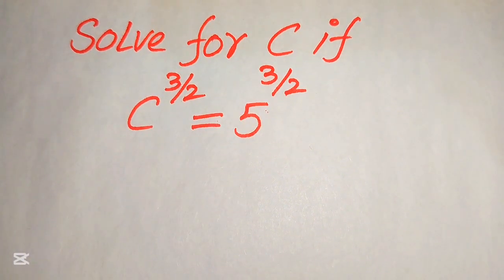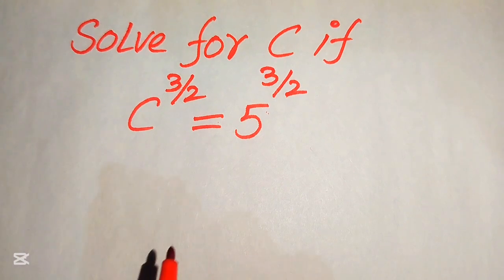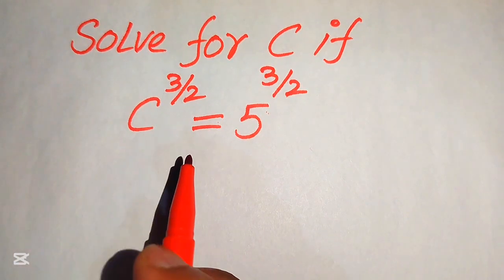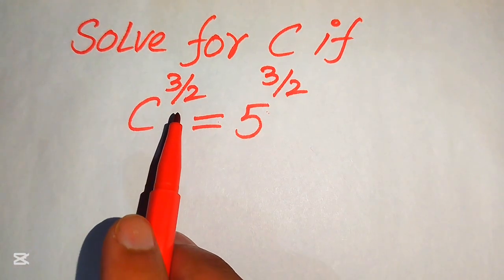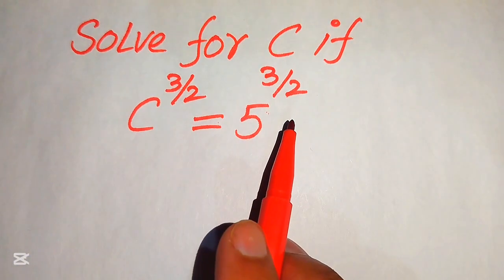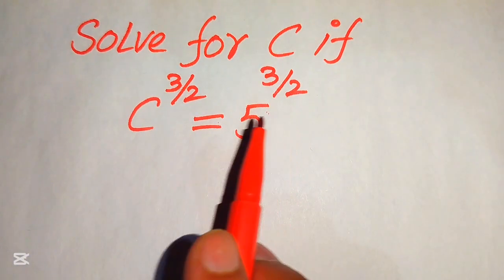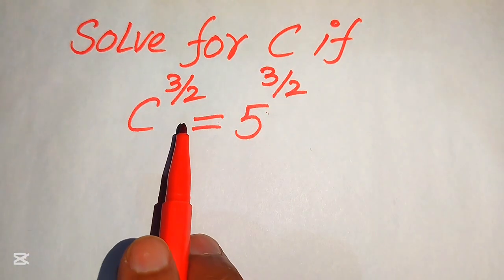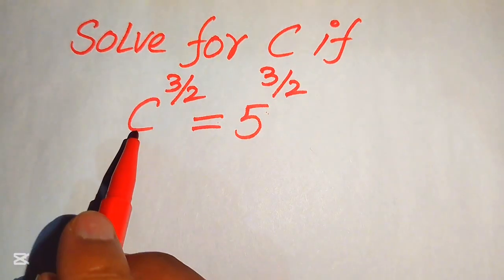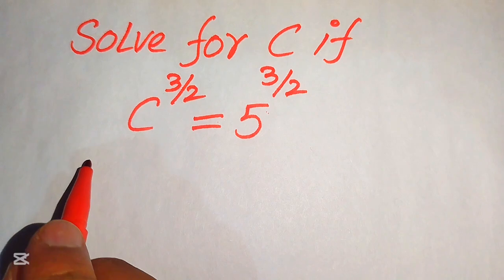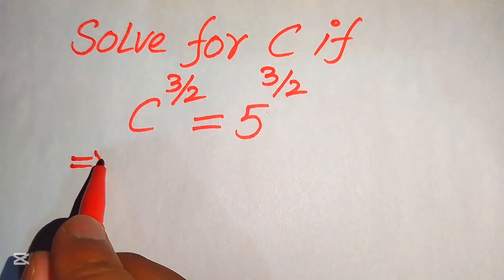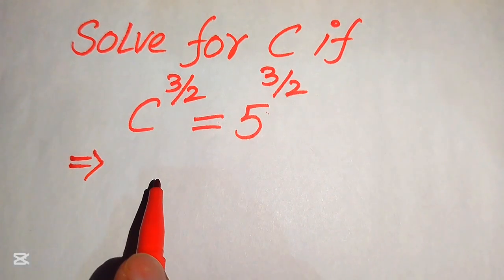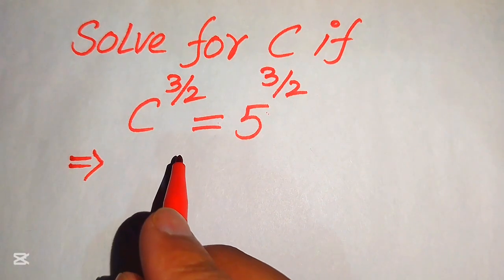The very first thing we are going to do is: we need to eliminate this 2 on both of the sides. So in order to eliminate this 2, we need to take the square on both of the sides.